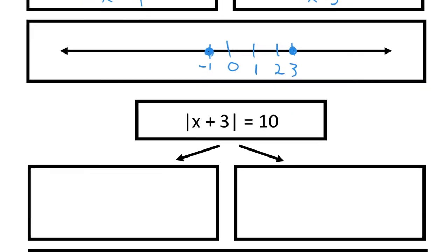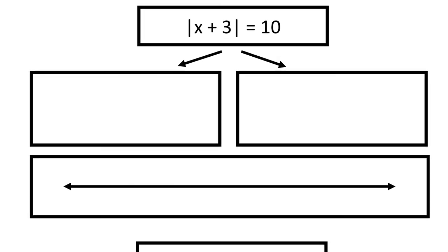The same thing applies for the next example. The way I would set this up, I have an equation of x plus 3 equals negative 10, x plus 3 equals positive 10. To solve the left-hand side, subtract 3 from both sides. x is negative 13. The right-hand side, subtract 3 from both sides. x is 7.